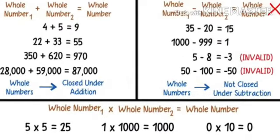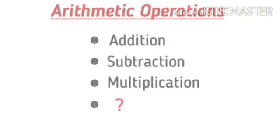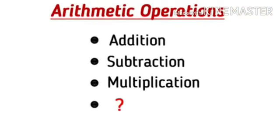Here's a quick recap of what we studied so far in this video. We learnt that whole numbers are closed under addition, not closed under subtraction and closed under multiplication. These three are arithmetic operations that we commonly use. Is there another one?